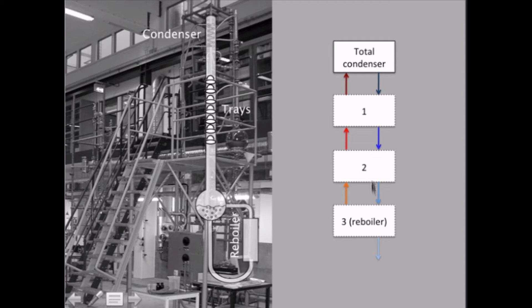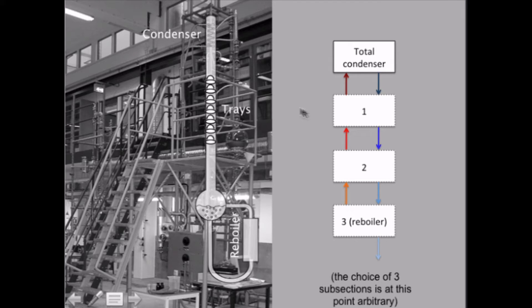I have drawn three equilibrium stages. The bottom one here is the reboiler. The reboiler is the perfect equilibrium stage, while the trays — we can't really be sure how many we need. So the choice of three here is arbitrary; we don't know how many we want, because we don't know the efficiency of these trays.